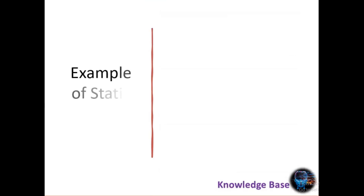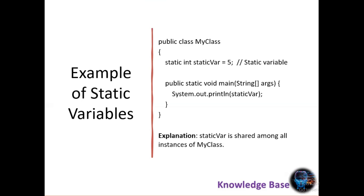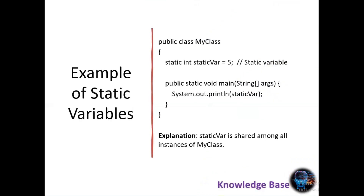Here is an example of a static variable. In this class 'MyClass', 'staticVar' is a static variable — notice how it is declared with the static keyword. When we print 'staticVar' in the main method, we are accessing the class-level variable, which is shared among all instances of 'MyClass'.